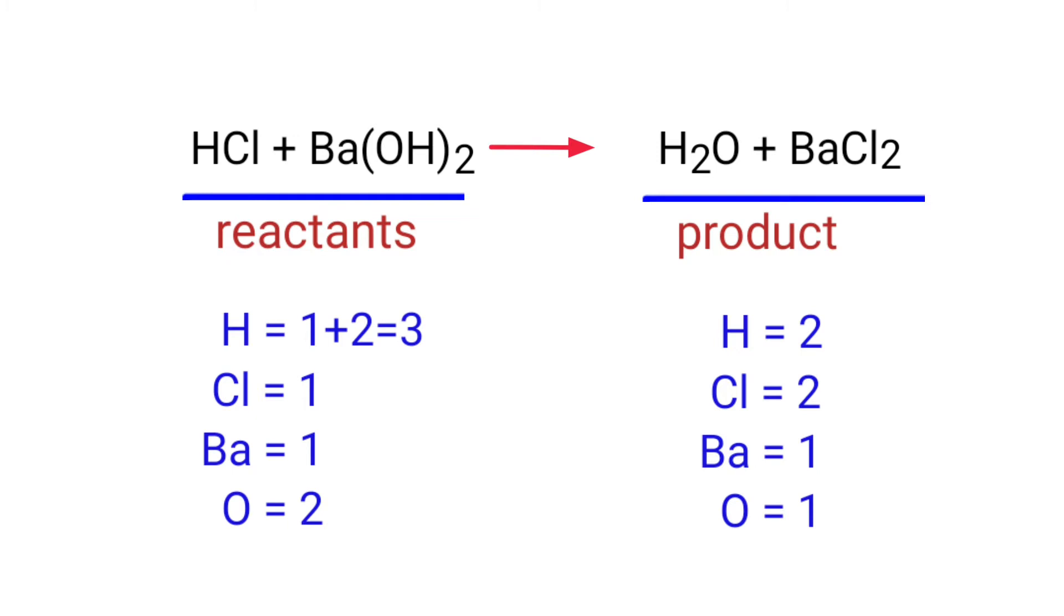On the reactants side there are 3 hydrogen atoms, 1 chlorine atom, 1 barium atom, and 2 oxygen atoms present. On the products side there are 2 hydrogen atoms, 2 chlorine atoms, 1 barium atom, and 1 oxygen atom present.